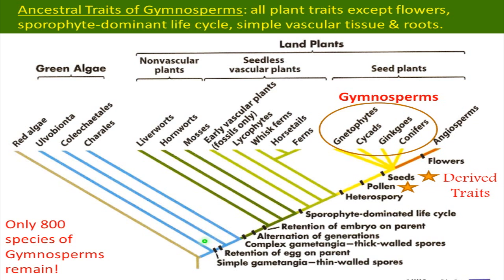One thing to note with gymnosperms: they have all of these wonderful adaptations. They have complex gametangia, alternation of generations, retention of embryo on the parent, sporophyte-dominated life cycle, heterospory — they have two different kinds of spores — they develop pollen, and then they have seeds. Seeds are quite a lovely mechanical breakthrough in plant technology.